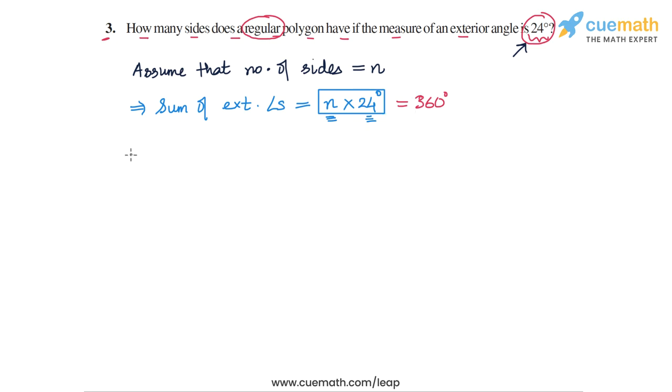So this is how we get an equation in n, which is n into 24 degrees equals 360 degrees. So this means that n, the number of sides, is equal to 360 degrees divided by 24 degrees.